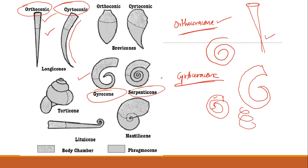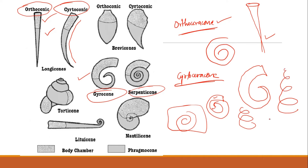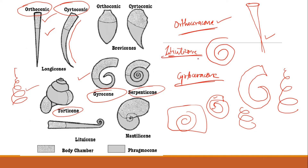Then you have your trocoheracone. This shell exhibits helicoid coiling. There are two types of coiling: plane spiral, where the coiling is all in the same plane, and helicoid coiling, which spirals upward like a helix. In trocoheracone there is helicoid coiling — you can see this torticone where the coiling is helicoid.